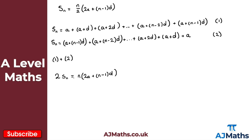All I need to do now is divide through by 2, which gives Sn equal to n over 2 multiplied by 2a plus (n minus 1)d. That's the result we wanted to prove — so that's our proof. That's everything for our introduction to an arithmetic series. Let's take a look now at a few exam-style questions.